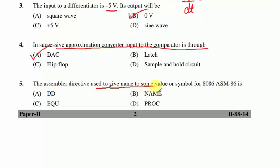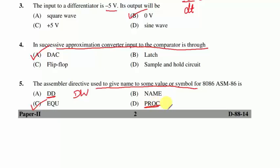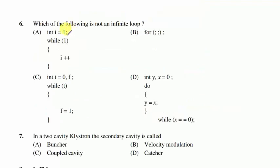In 8086: declaring an 8-bit variable uses DB; a 16-bit variable uses DW; temporary variables use EQU (equate). To declare a procedure, use PROC followed by NEAR or FAR explicitly, write the procedure body, and terminate with ENDP.